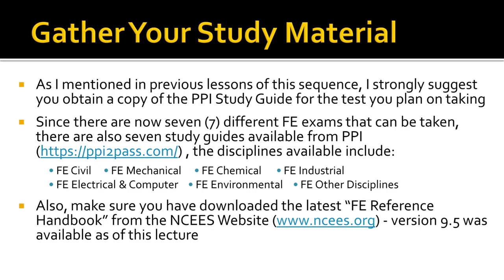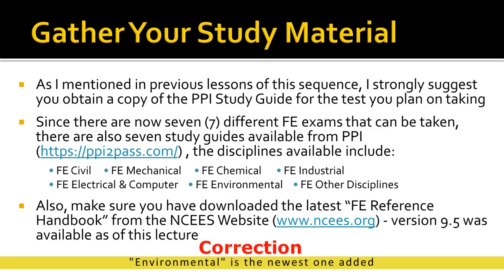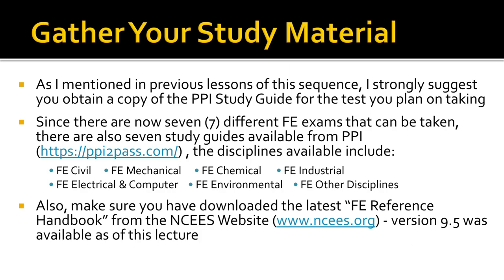Once you've made that determination, gather your study material. I strongly suggest you obtain a copy of the PPI study guide for the test you plan on taking. It's quite expensive — anywhere between $100 and $200 depending on your discipline — but it's well worth it. You can buy them directly from PPI; there are seven different FE exams now, and it looks like they added a new one — industrial. You can go to ppi2pass.com. I also suggest you get both the study guides and sample tests, which they offer for many of these.